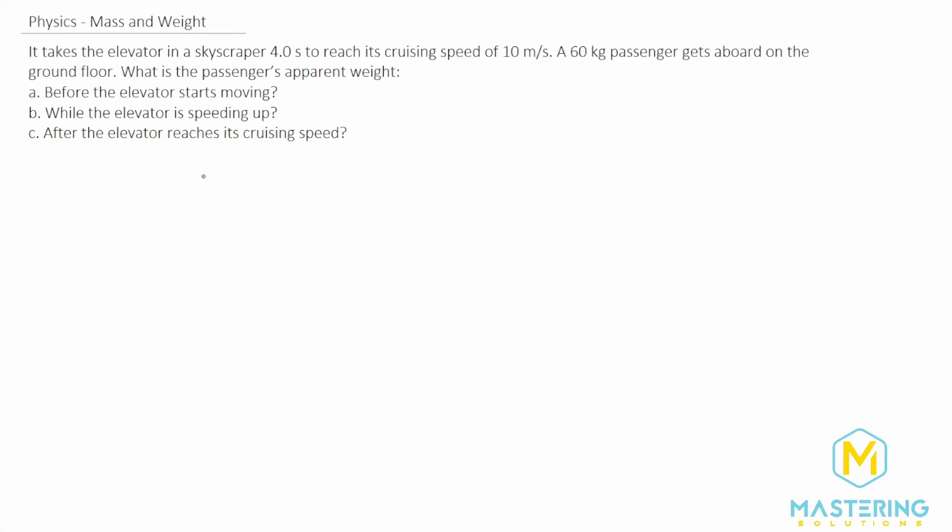Welcome to Mastering Solutions. For this mass and weight problem, we have an elevator and a skyscraper that takes four seconds to reach the cruising speed of 10 meters per second. We have a 60 kilogram passenger on the ground floor, and we need to figure out the apparent weight for these three situations: before it starts moving, while it's speeding up, and when the elevator reaches its cruising speed.